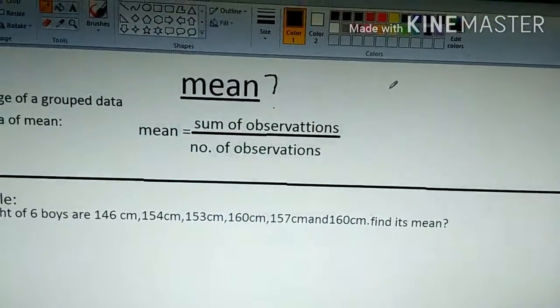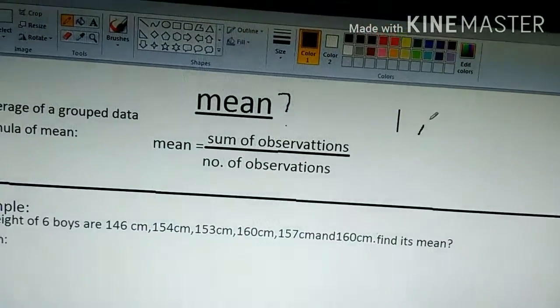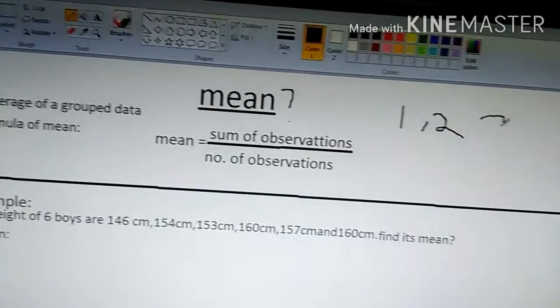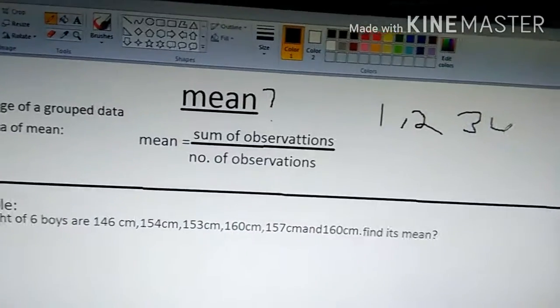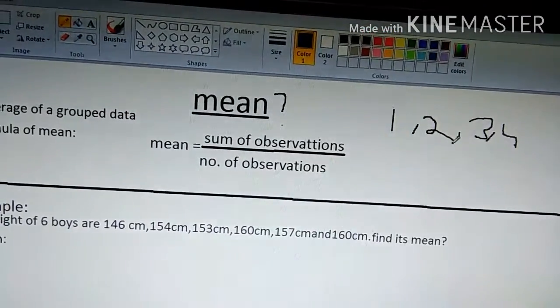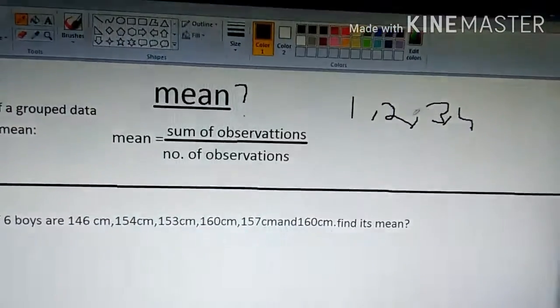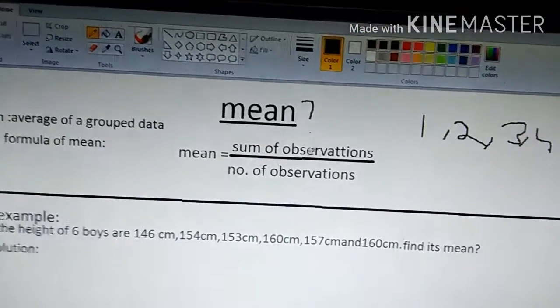Let's take some group of data as 1, 2, 3, and 4. For this, we need to find the average. The average obtained is known as the mean.